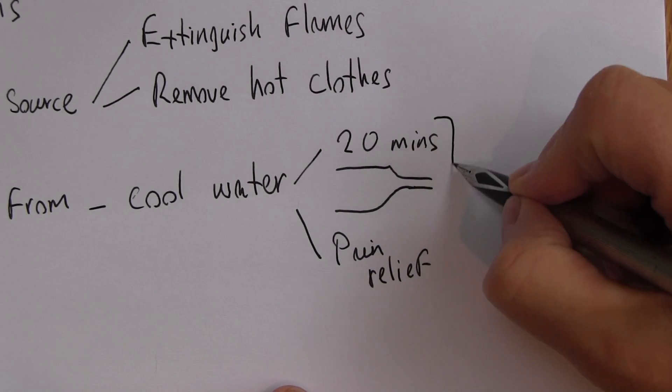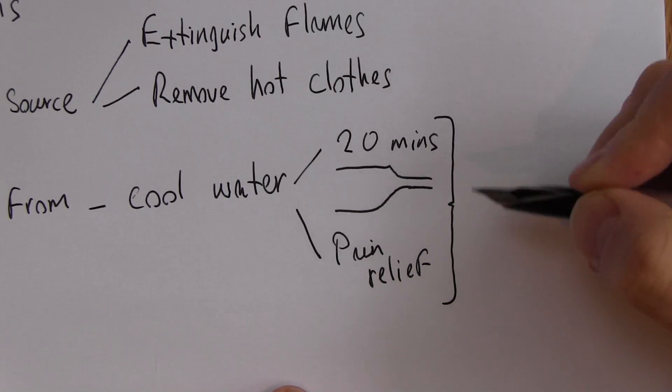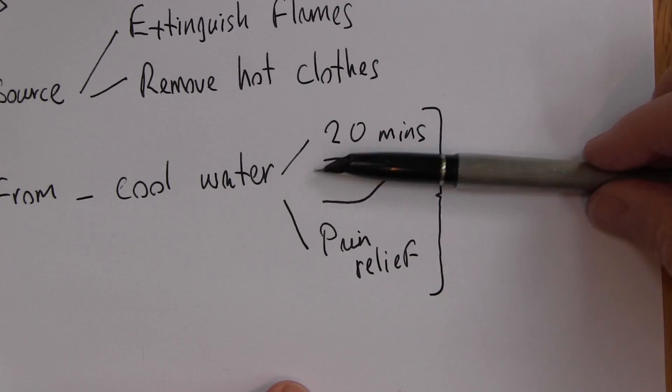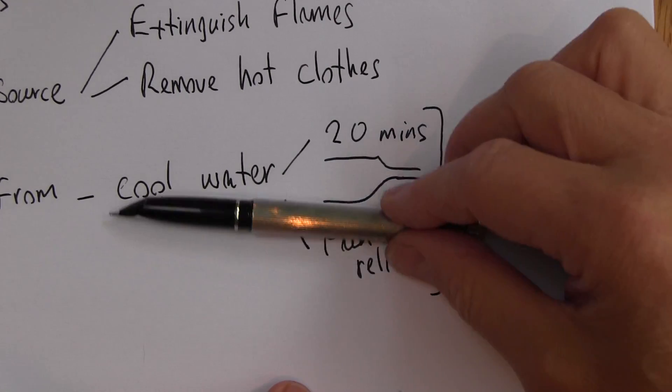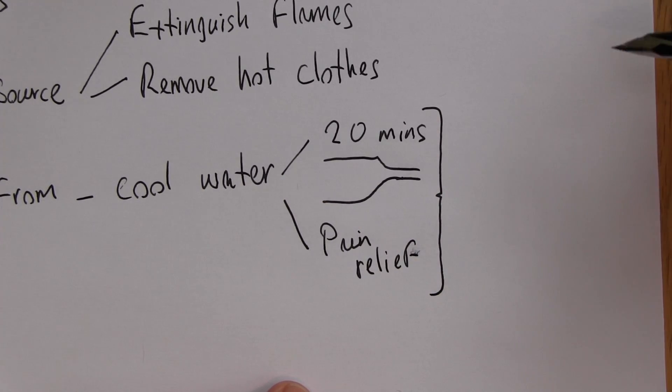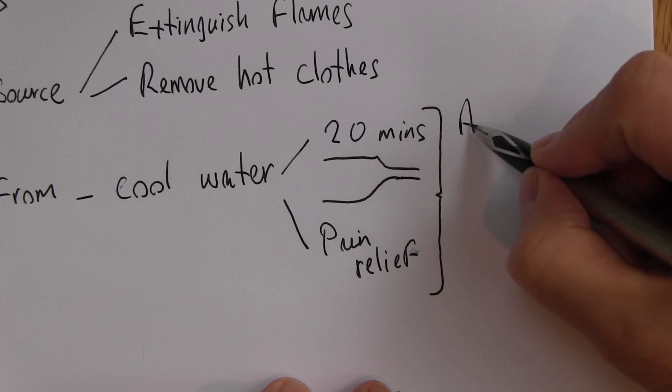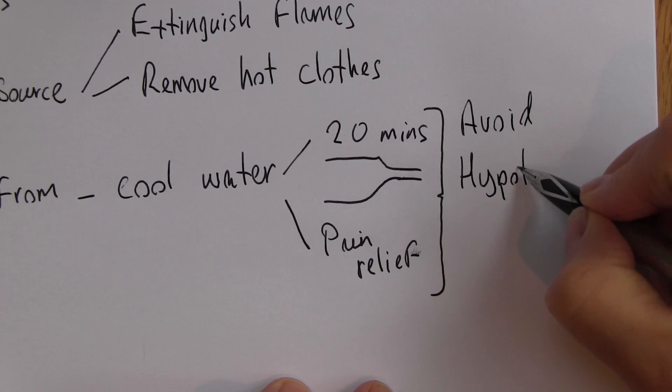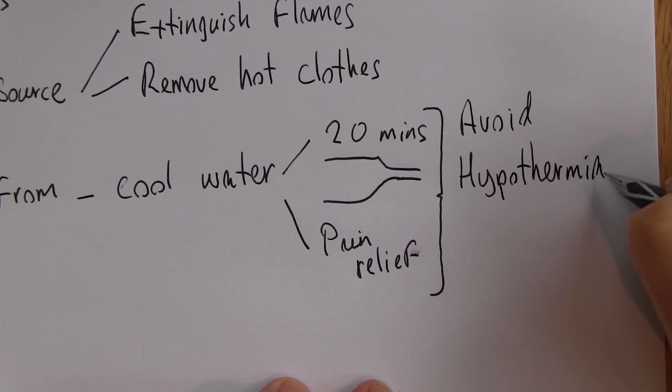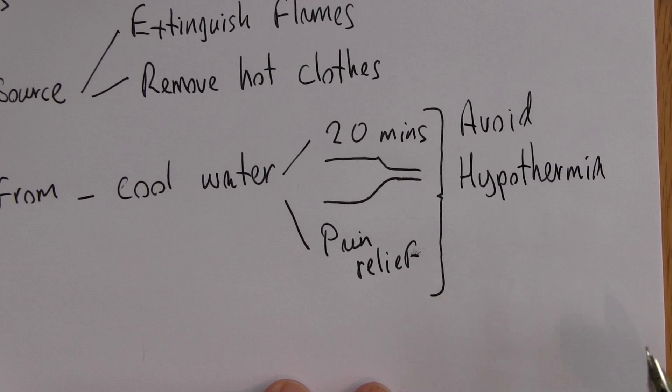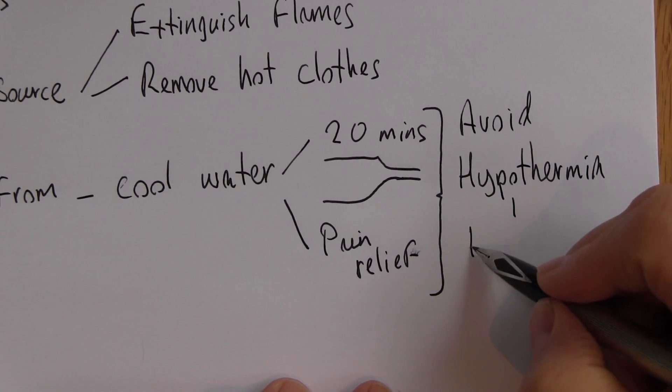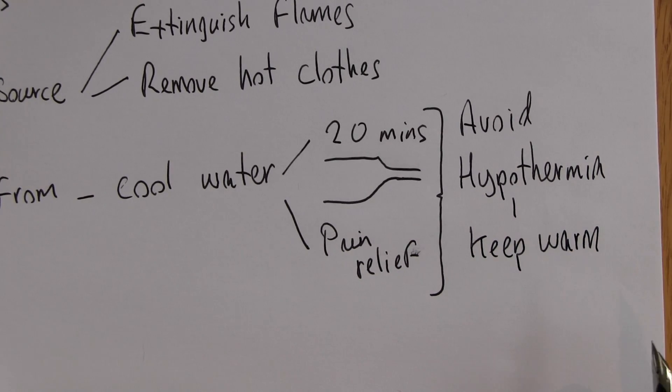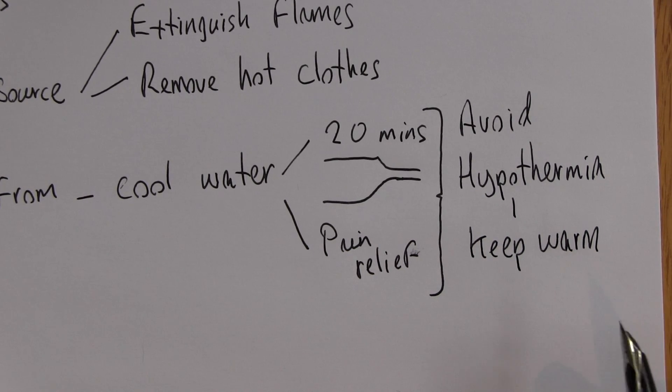So it's good to remove the heat from it, but also people with burns, we have to remember, are actually prone to hypothermia. Water is very cooling systemically. So we want the cool water to cool the area locally, but we want to avoid systemic cooling, avoid hypothermia. Hypothermia is a complication of burns, so the patient needs to keep warm. Cool the burn, keep the patient warm.